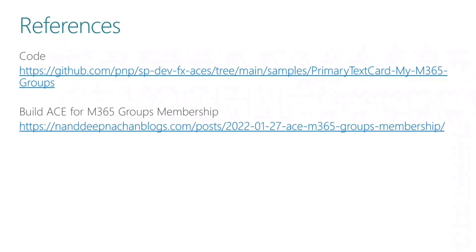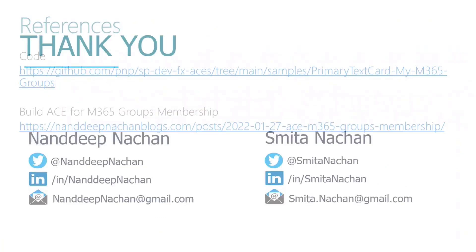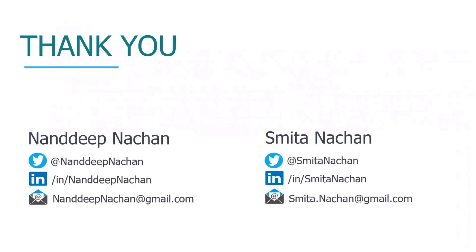Deployment is straightforward — prepare and deploy the solution package by running gulp bundle and then gulp package-solution, then deploy the generated package to the SharePoint tenant app catalog. The major thing is Graph API permissions: after deploying, the SharePoint administrator needs to approve graph API permissions from the SharePoint admin center under the API access blade. A word of caution — group.read.all is a risky permission level as it allows reading group properties, membership, calendar, and conversation for all groups. Consider directory.read.all instead, which allows reading data without going into membership or conversation details.